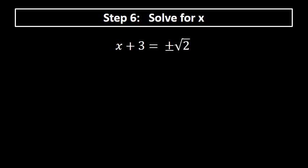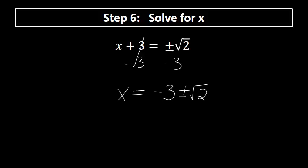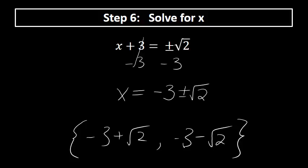Step six: solve for x by subtracting 3 from both sides. The solution is x equals negative 3 plus or minus the square root of 2. This represents two solutions: negative 3 plus the square root of 2, and negative 3 minus the square root of 2. These are the only two values that satisfy the original quadratic equation.